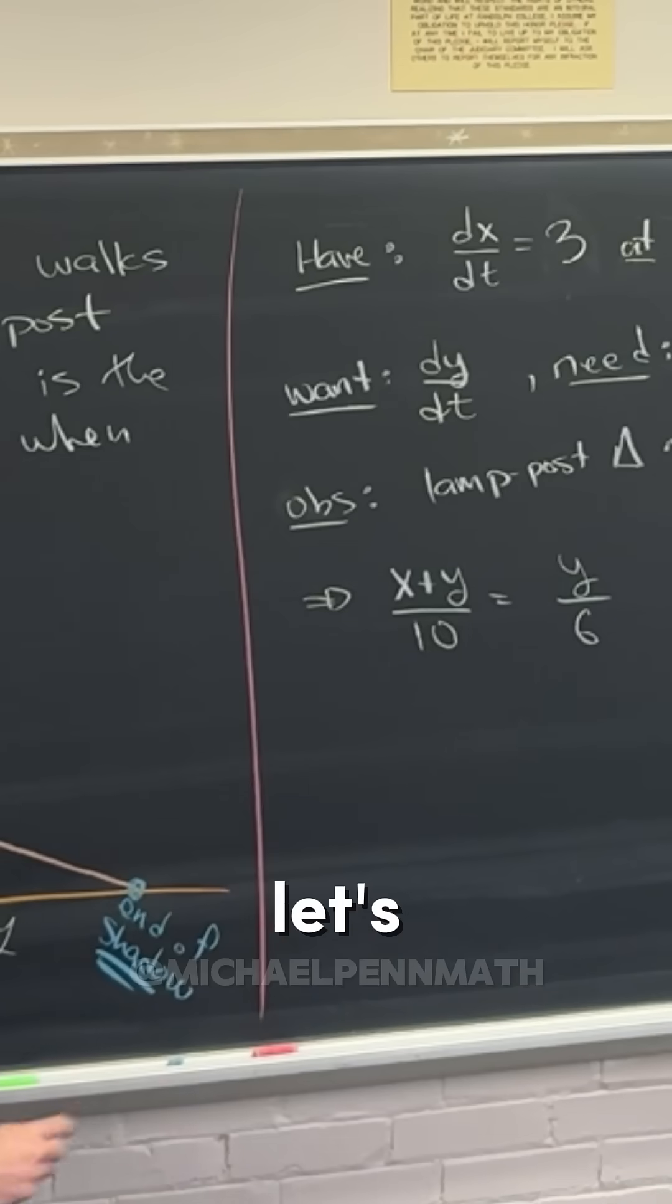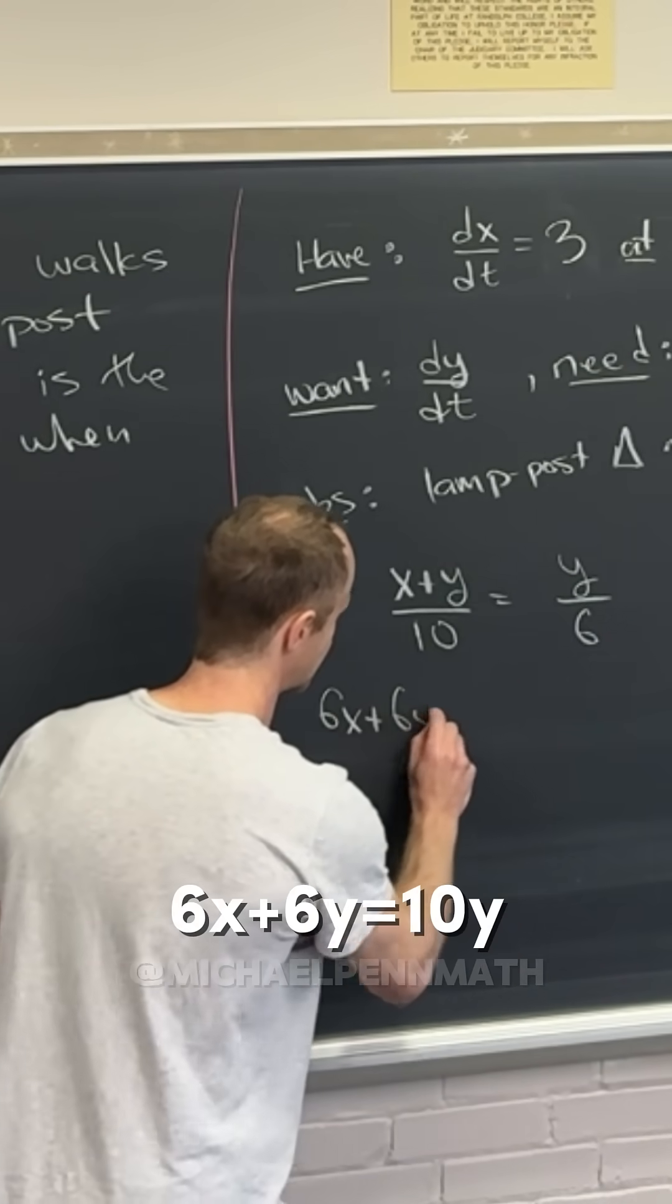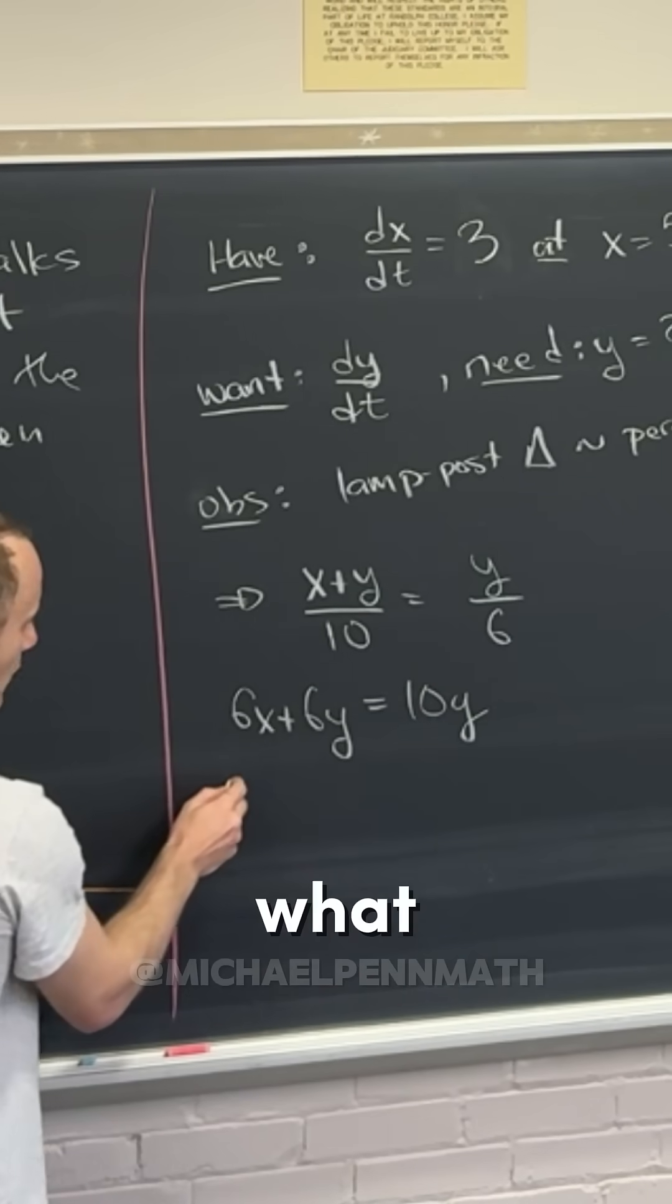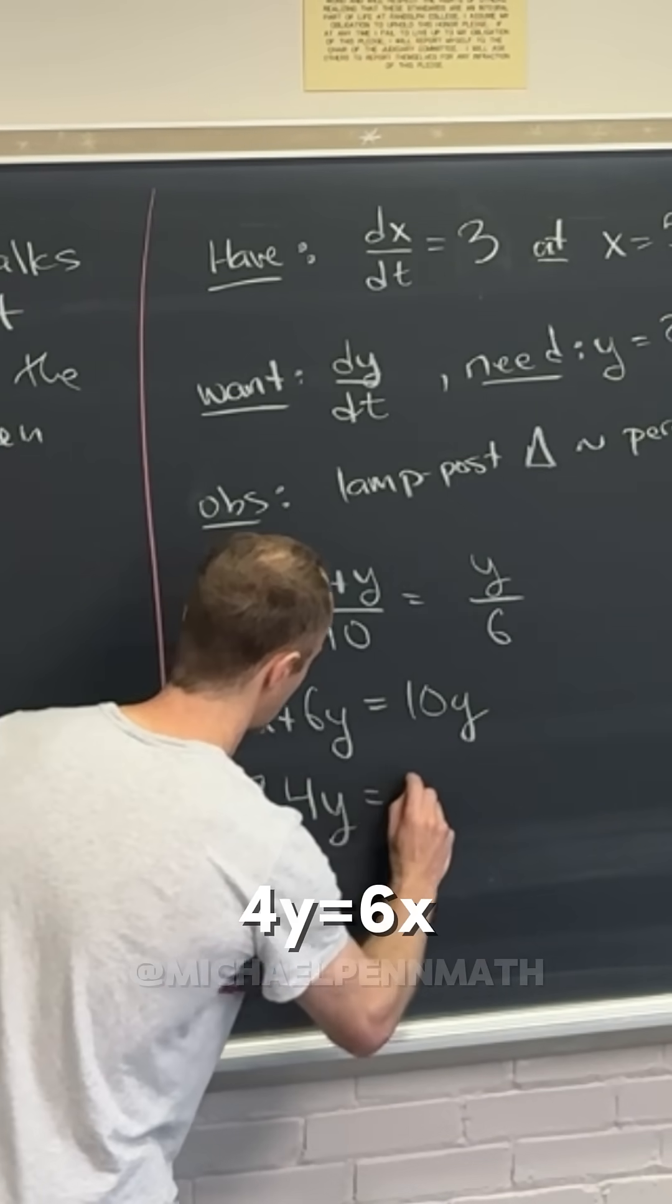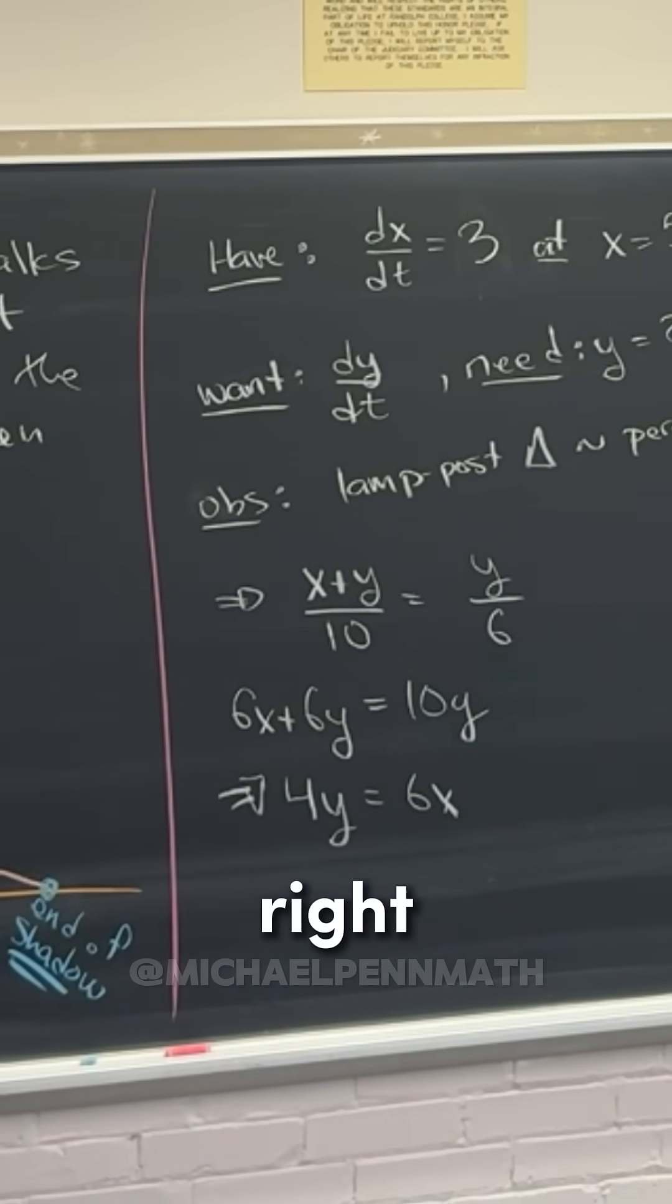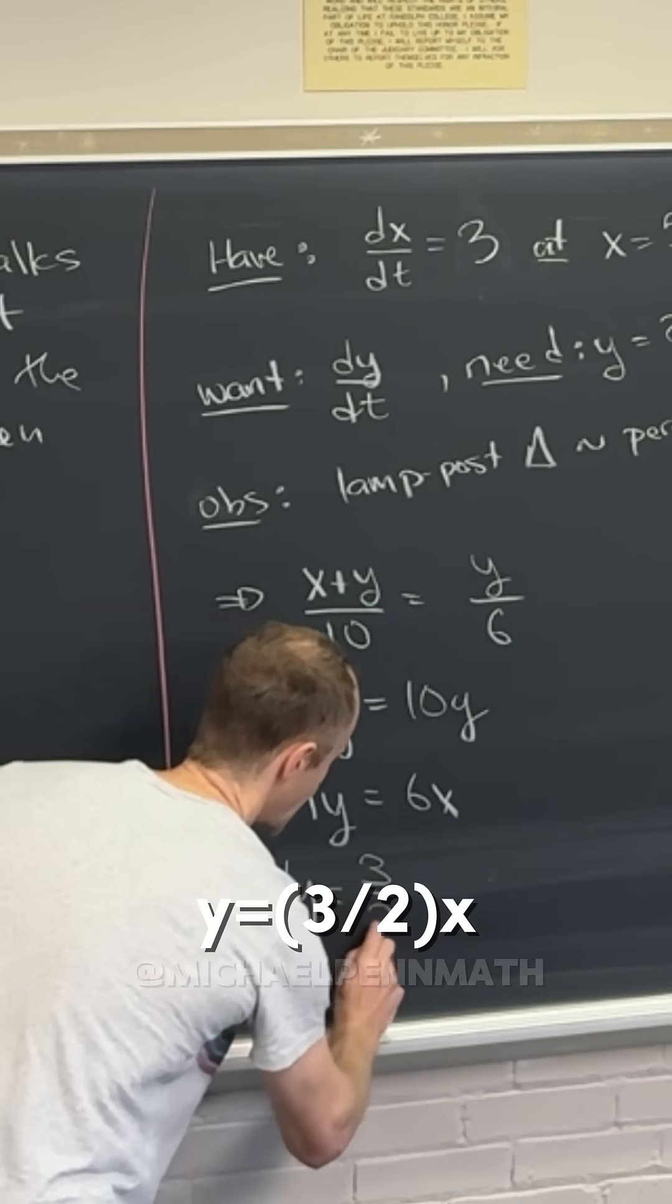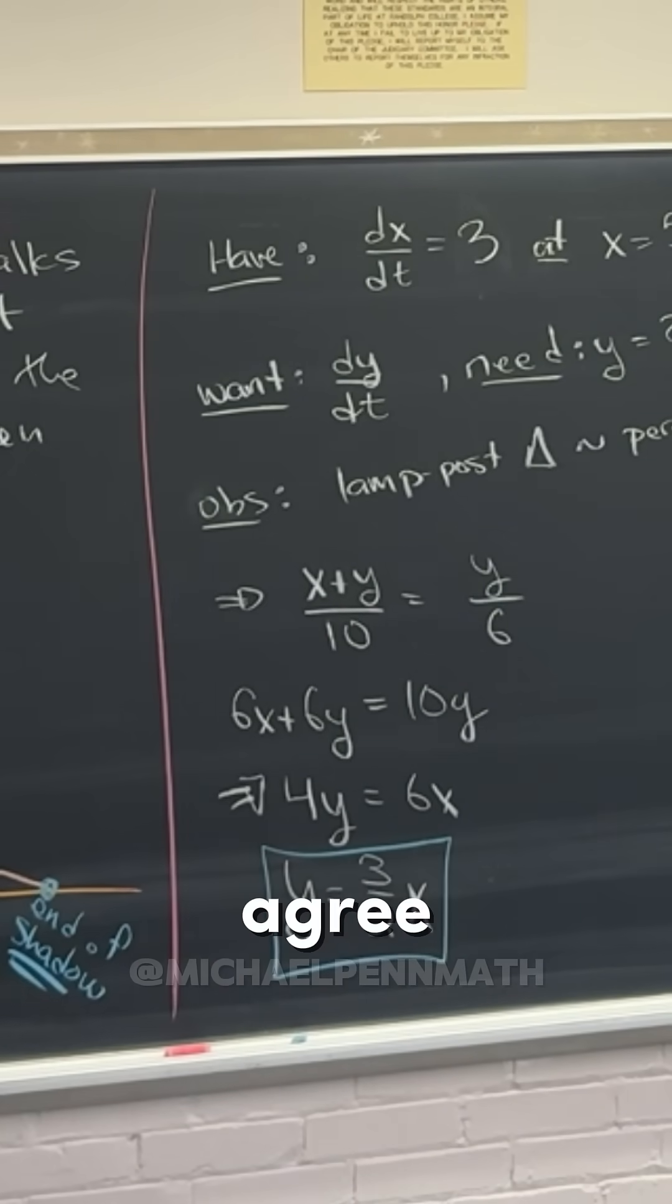Let's clear denominators here. We'll have 6x plus 6y equals 10y. From that we'll have 4y equals 6x after moving some things around, and that's going to give us y equals three halves x.